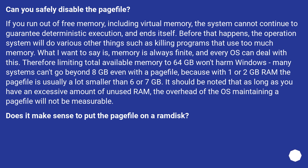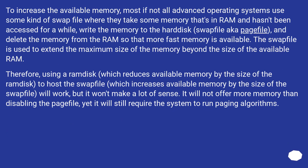Does it make sense to put the page file on a RAM disk? Most advanced operating systems use some kind of swap file — they take memory from RAM that hasn't been accessed for a while, write it to the swap/page file on disk, and free up that RAM for other use. The swap file extends maximum available memory beyond physical RAM. Therefore, using a RAM disk — which reduces available memory by the size of the RAM disk — to host the swap file will technically work, but it won't make a lot of sense. It will not offer more memory than simply disabling the page file, yet it will still require the system to run paging algorithms.